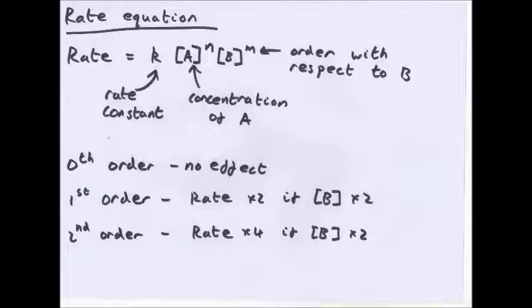So zero order, so you had A to the power of zero, no effect. So you could change the concentration of A, no effect would occur. First order means that if you doubled the concentration, you would double the rate. And second order is if you double the concentration, the rate times it by four, you square it. So if you times it by three, the concentration, the rate will increase by nine.